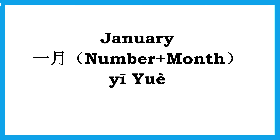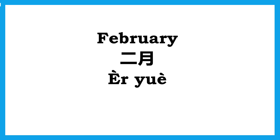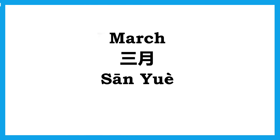Just now we have learned how to say month in Mandarin Chinese, and in my previous video we have learned how to say the numbers in Mandarin Chinese. So January is Yi Yue, February is Er Yue, March is San Yue.